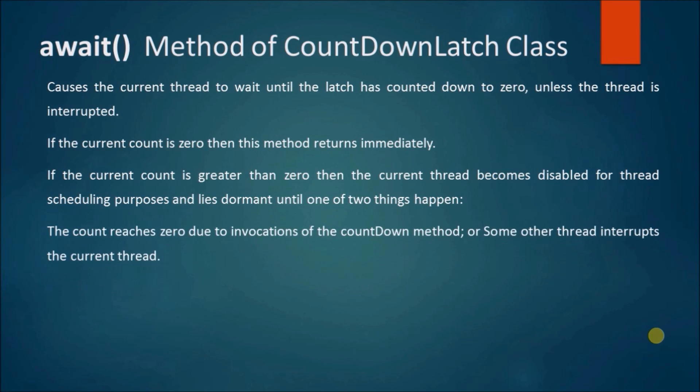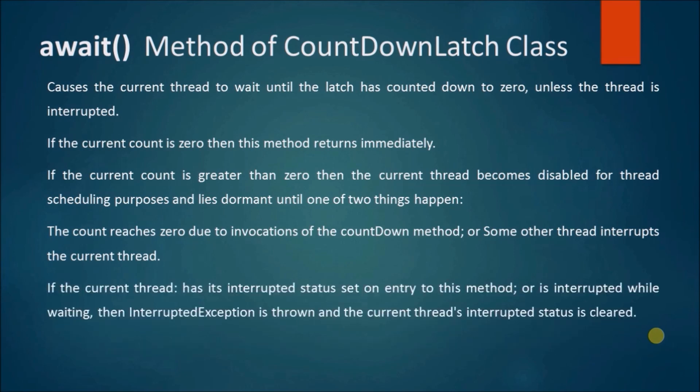The count reaches zero due to invocations of the countdown method, or some other thread interrupts the current thread. If the current thread has its interrupted status set on entry to this method or is interrupted while waiting, then interrupted exception is thrown and the current thread's interrupted status is cleared.